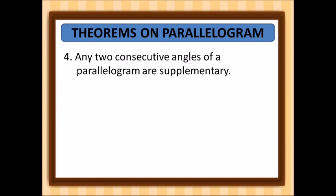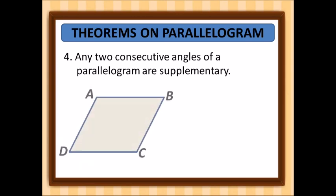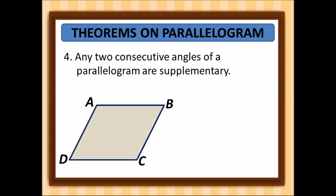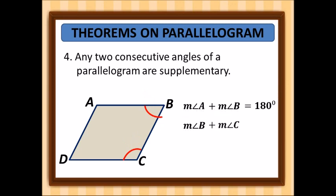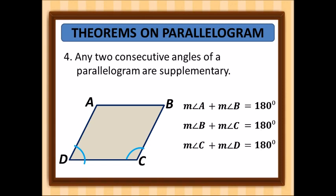When we say supplementary, the sum is 180 degrees. The two consecutive angles: angle A plus angle B equals 180 degrees. Another pair: angle B plus angle C equals 180 degrees. And the last pair: angle A plus angle D also equals 180 degrees.